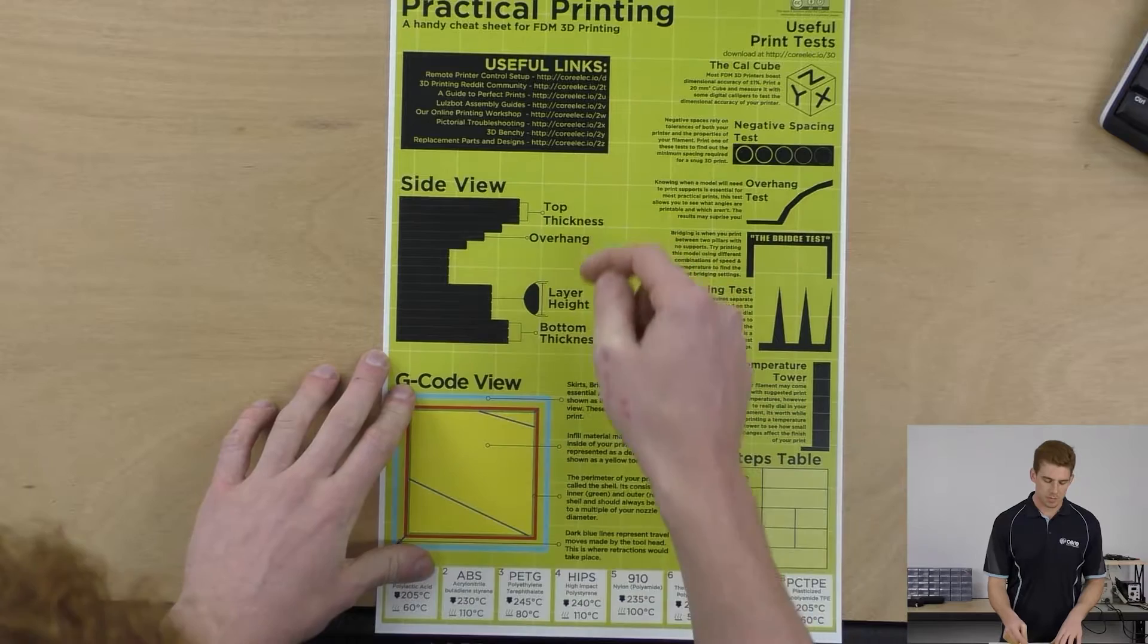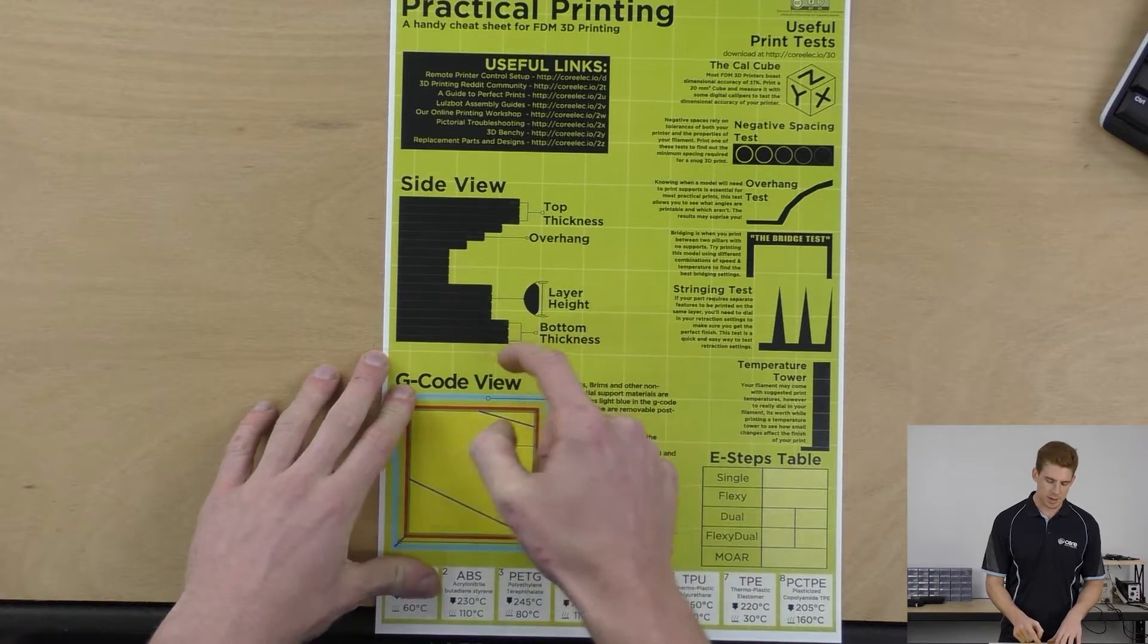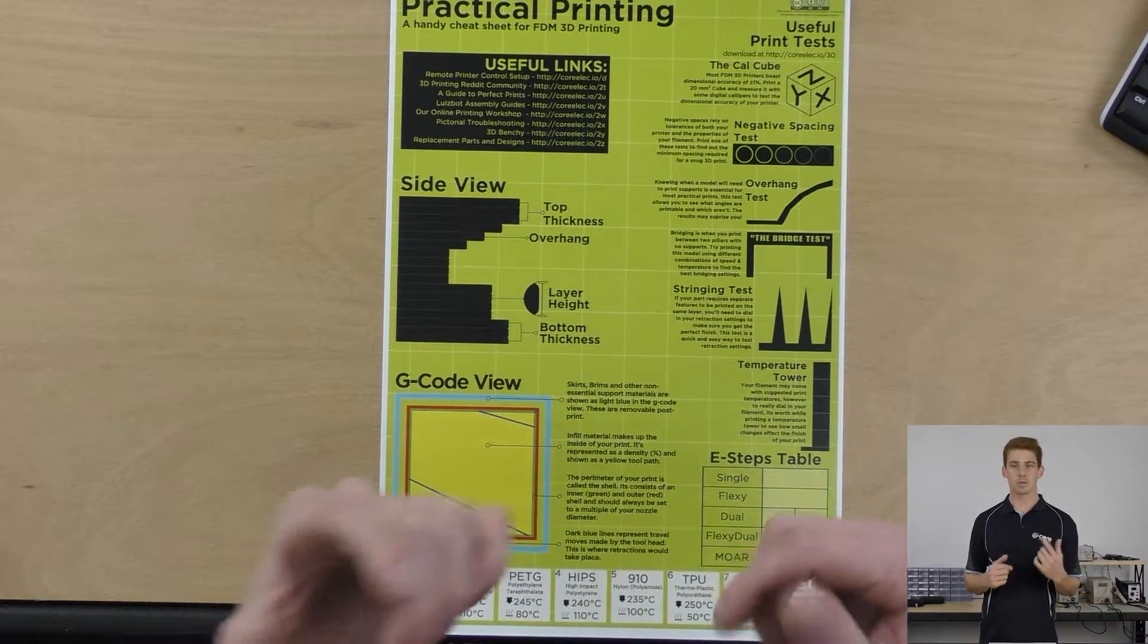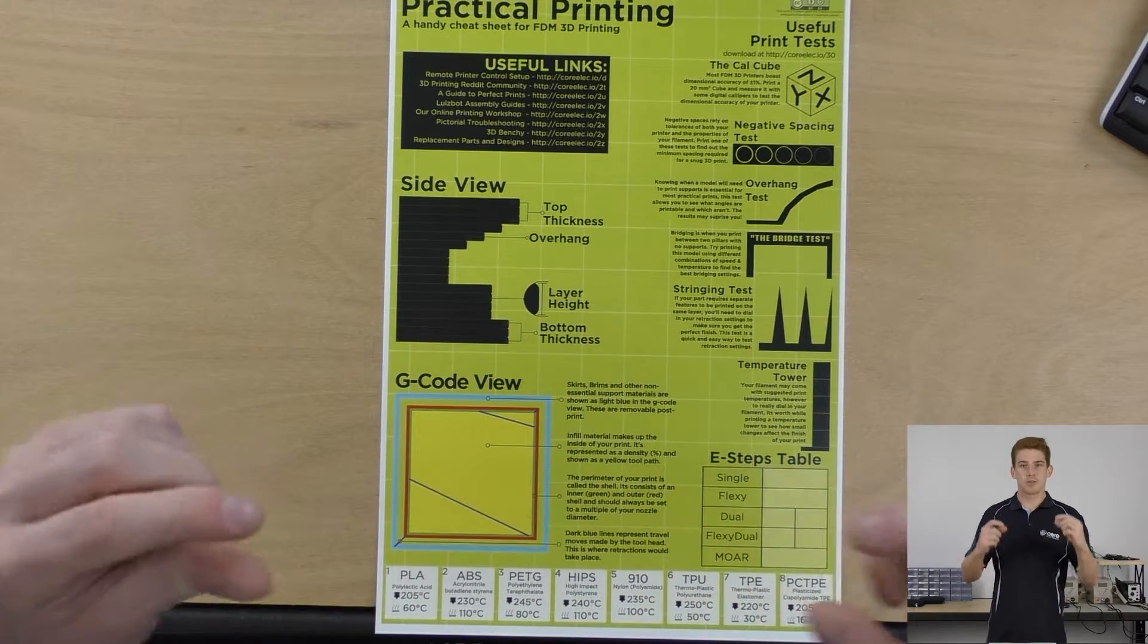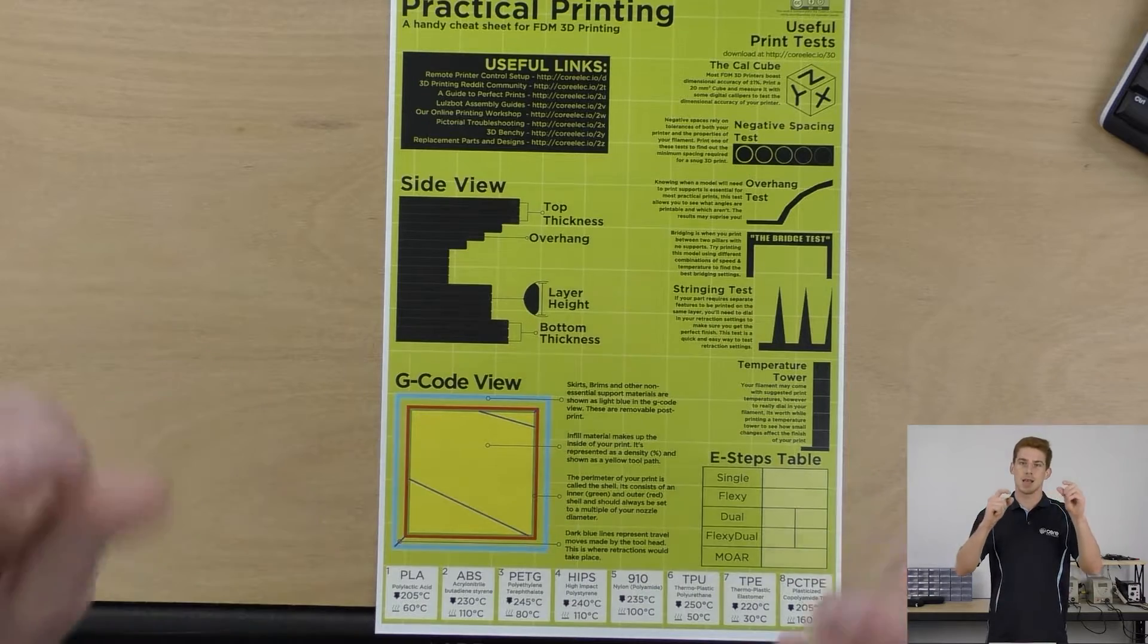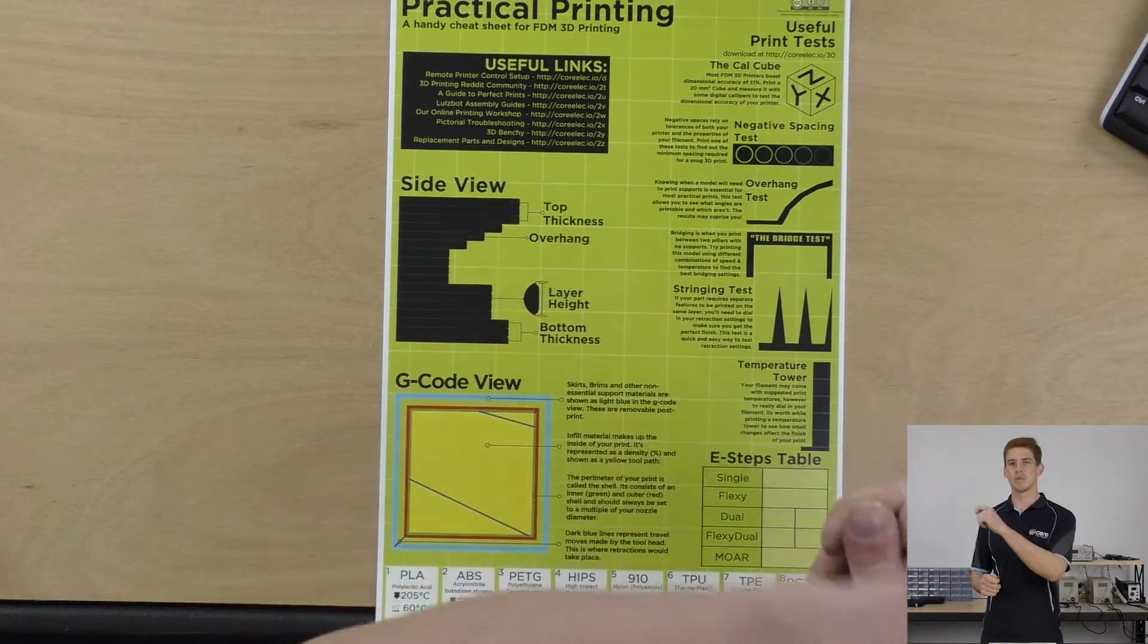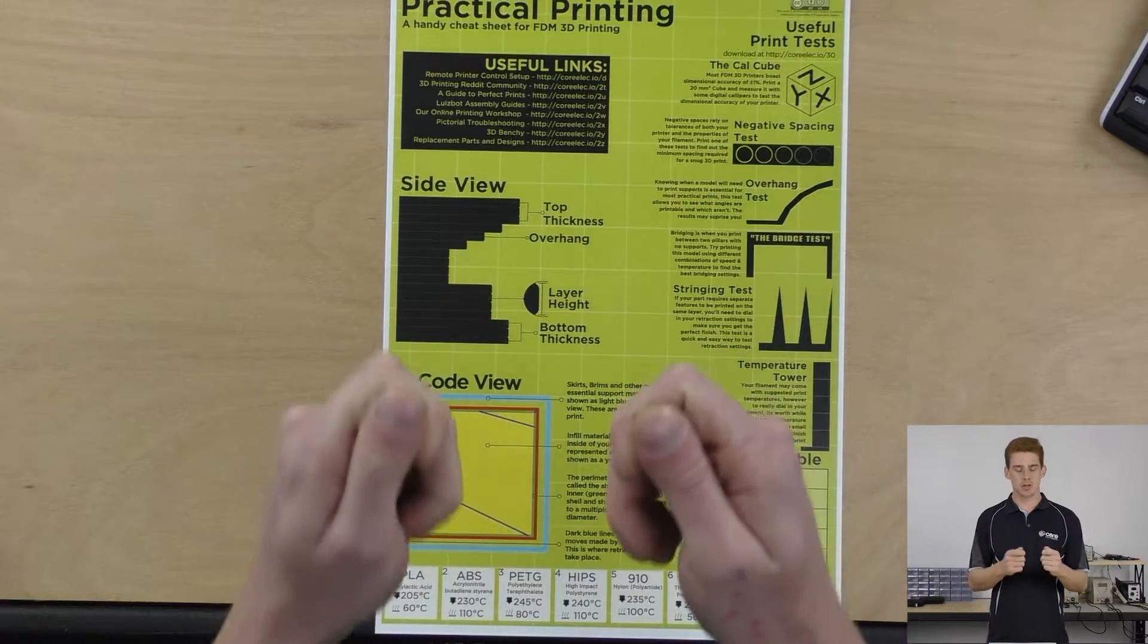If you look at the bottom and top thickness, you can actually see that they branch out and include a selection of layers. The bottom and top thickness is usually set as a joint setting in your slicer software and it refers to the number of solid layers at the bottom and top of your print. It's usually a multiple of your layer height. It doesn't have to be but it usually is.